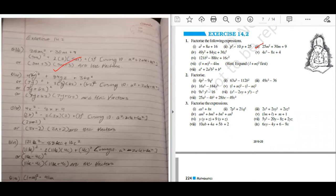This is 49, 7y whole square, 6z whole square, 2 into 7y, 6z, 7y plus 6z. Correct, good.